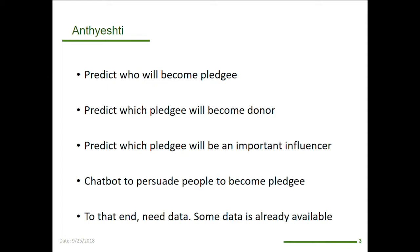If you recall, their problem was getting people to become pledges for organ donation. If we could predict who will become a pledgy, then we can focus our marketing attention on those people. Second, which pledgy may become a donor, because there are six steps required from pledgy to becoming a donor — that will also help in focusing our attention. Which pledgy may become an important influencer in getting other people to become organ donors? And a chatbot to persuade people to become pledgy — this is much more futuristic. These three are things that are much more near-term and realistic.